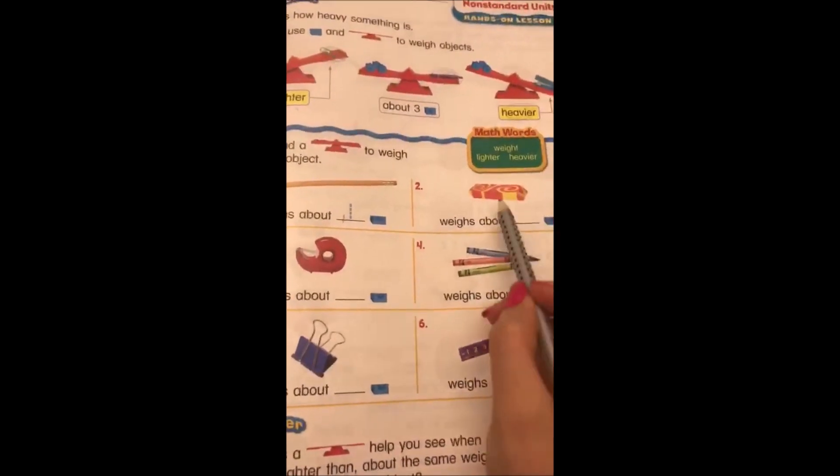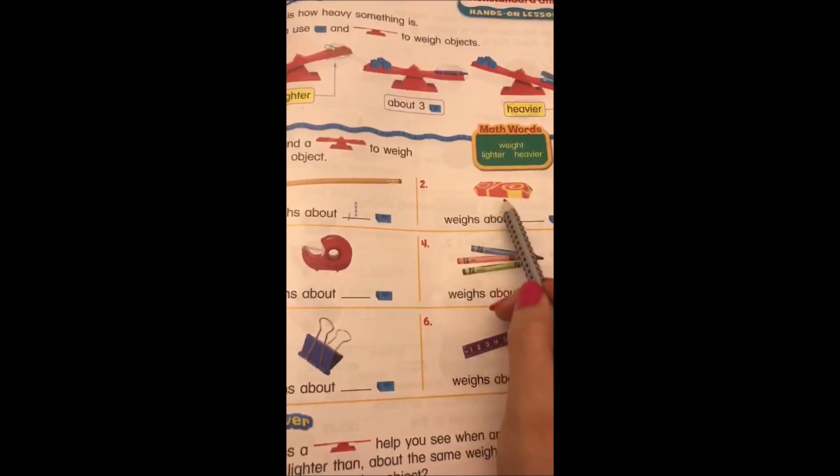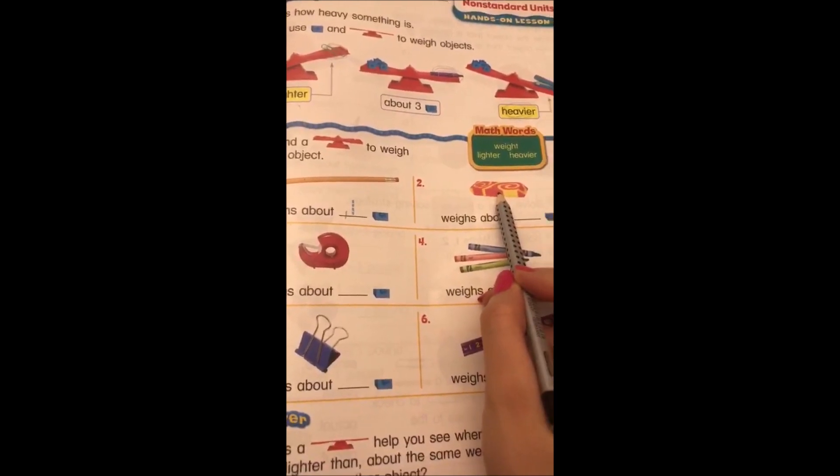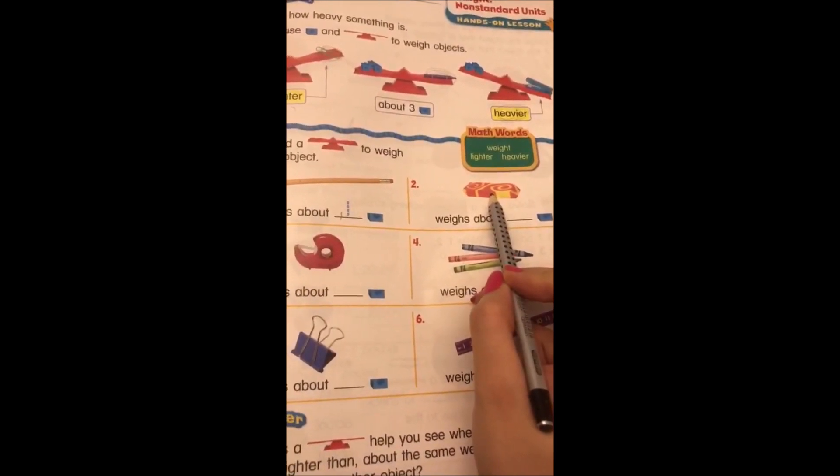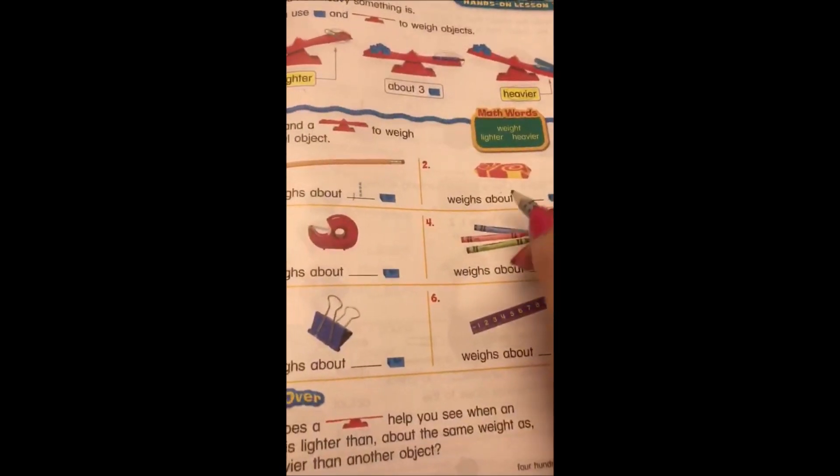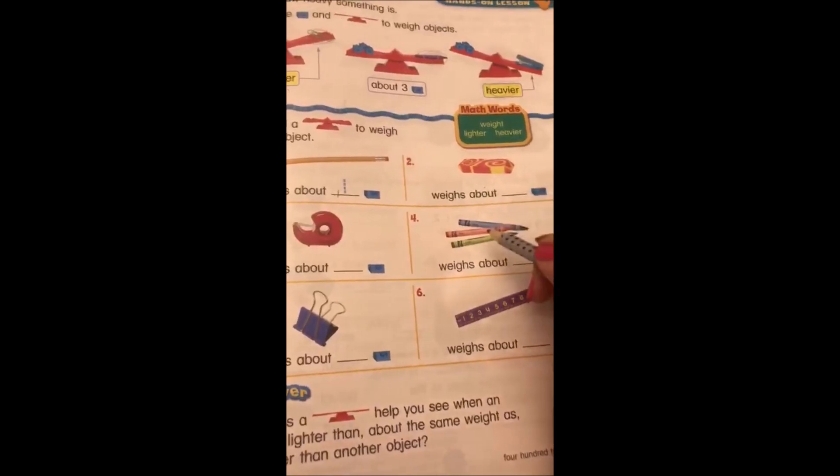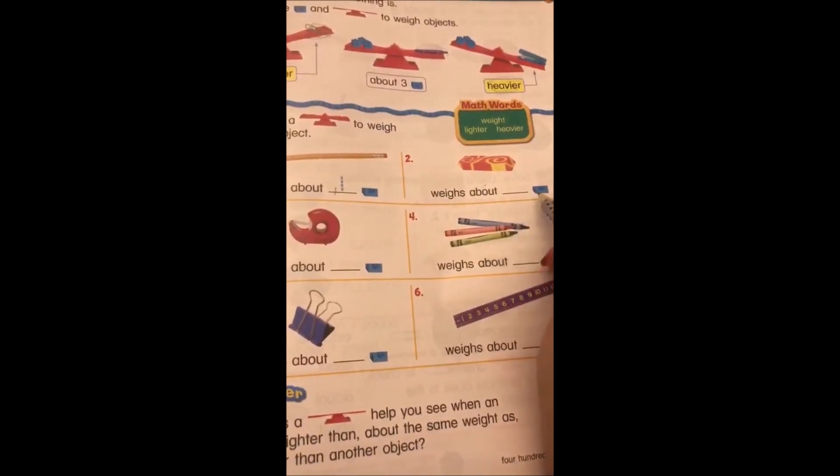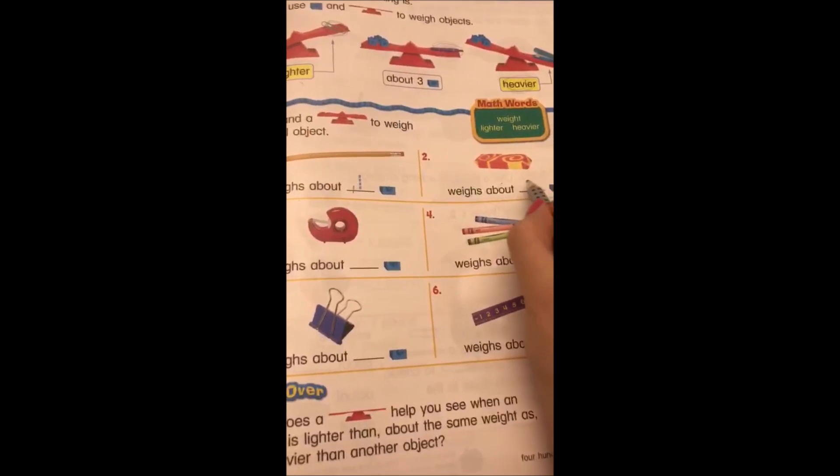We're just playing a game to estimate what is lighter, what's about, and what's heavier. So if you don't have the same answer as mine, it's totally fine. So here, I'm going to say that this eraser is going to be about three because it's like a marker. They have the same, so for me I will say it's going to be about three cubes.